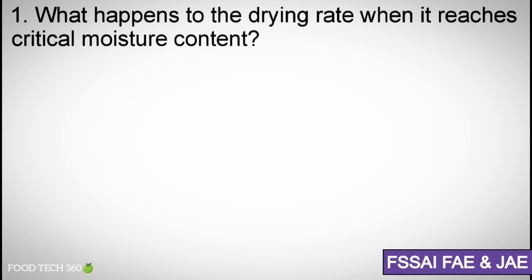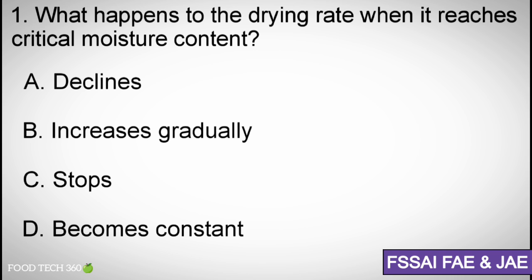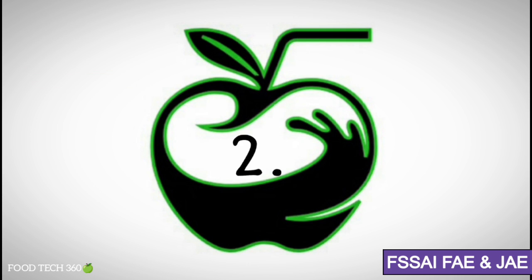Question number 1. What happens to the drying rate when it reaches critical moisture content? A. Declines, B. Increases Gradually, C. Stops, D. Becomes Constant. Correct answer A. Declines.